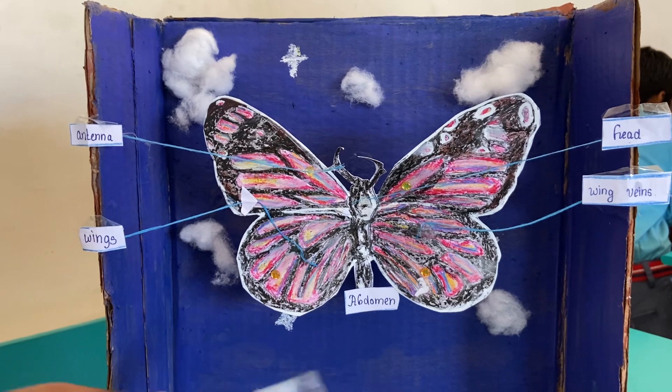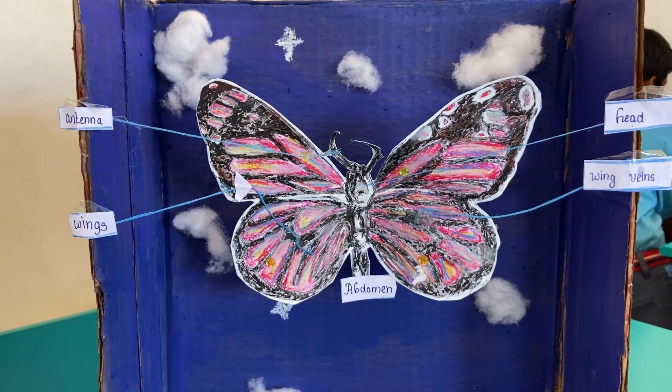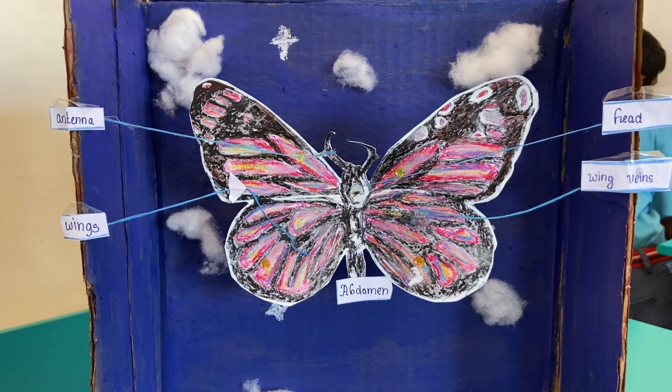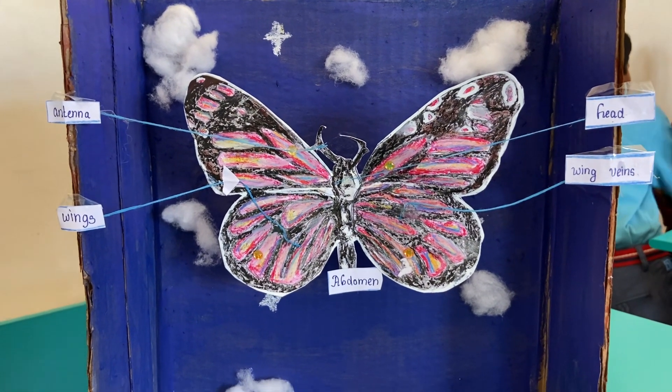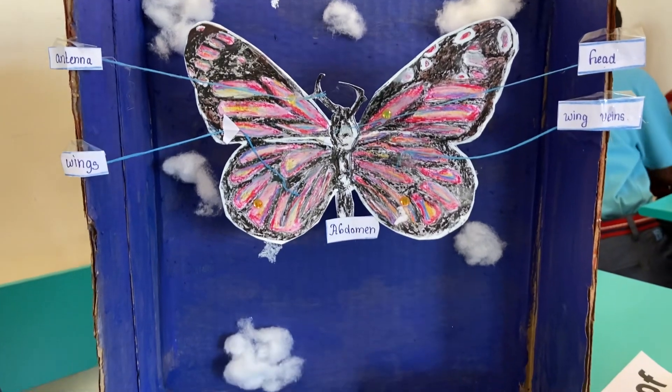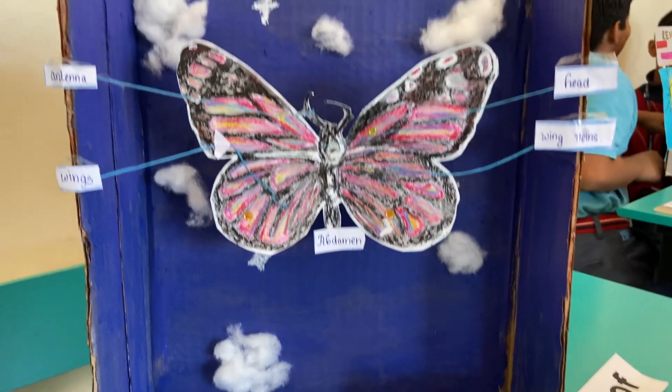Next is the abdomen. The abdomen consists of its reproductive organs and the digestive organs. Let me end this presentation with a wonderful fact.